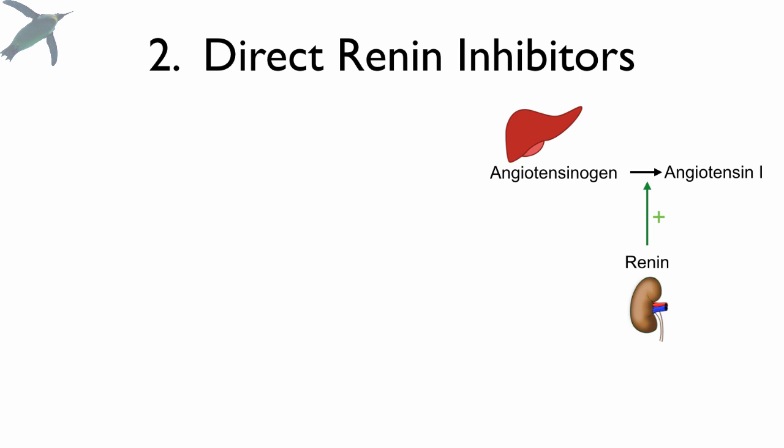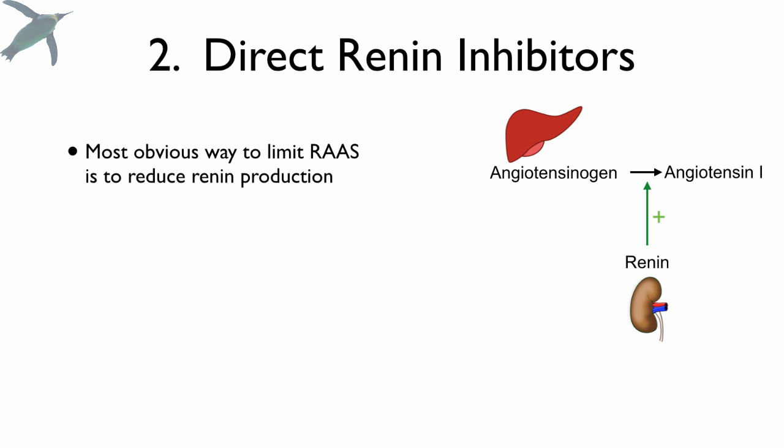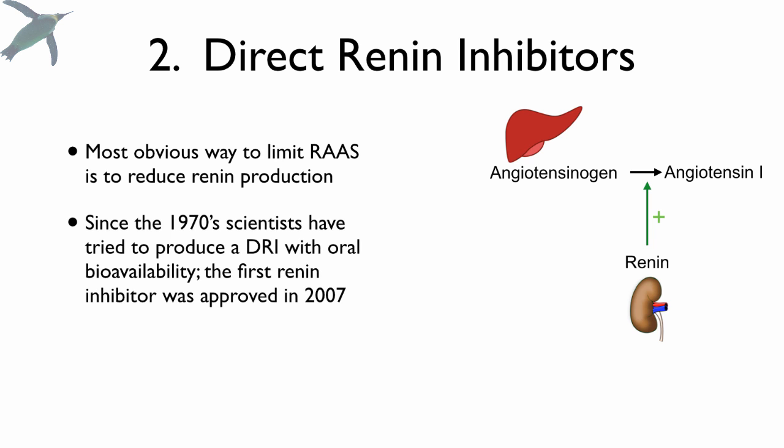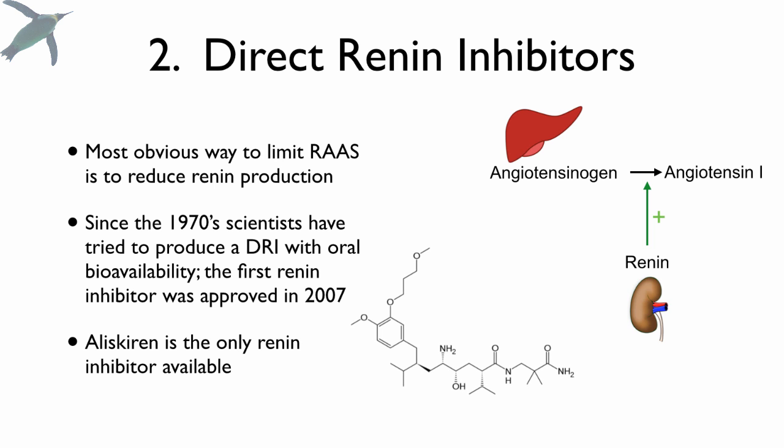Direct renin inhibitors are the most obvious way to limit the RAS system — it's like killing it at step one. Interestingly, researchers have been working since the 1970s to develop a direct renin inhibitor with oral bioavailability, which turned out to be really difficult. There is really one on the market as of the making of this tutorial, approved in 2007, and it blocks the production of renin.